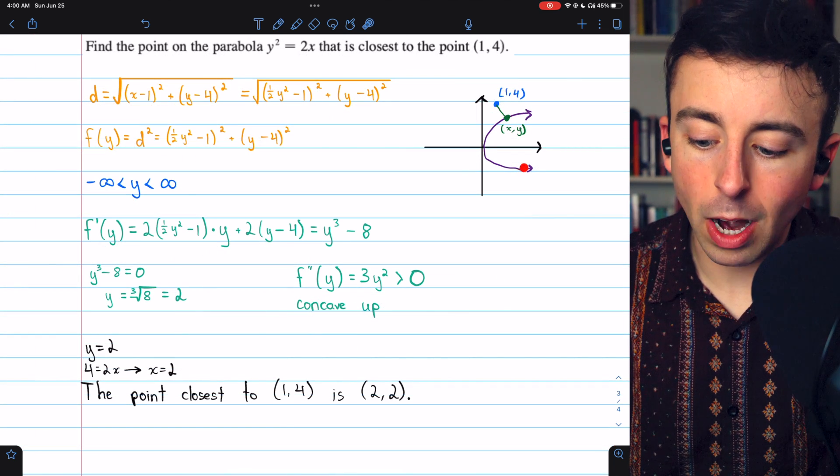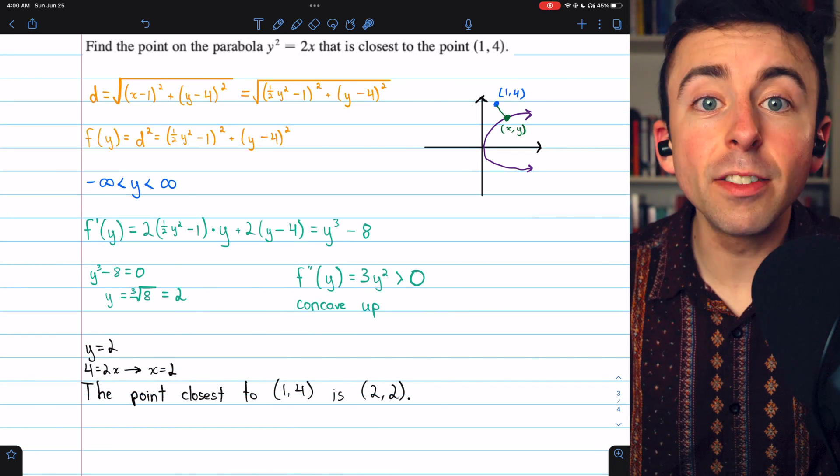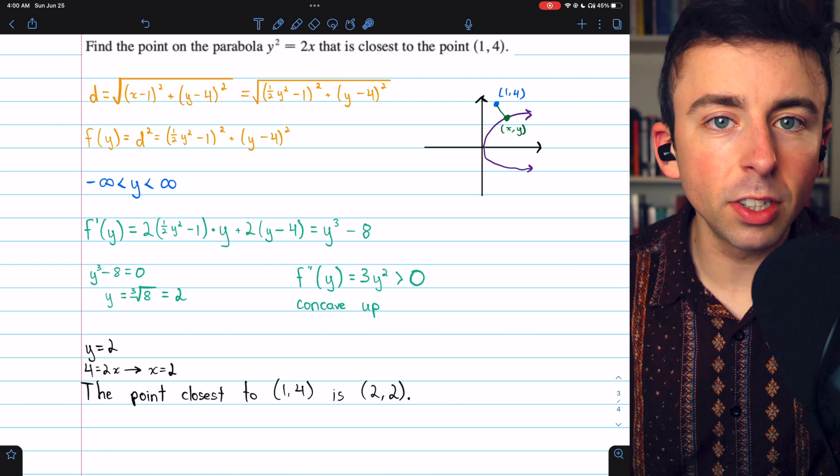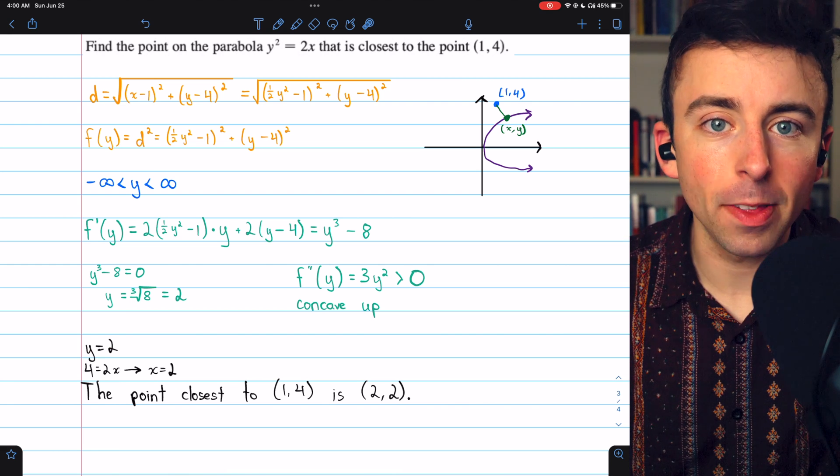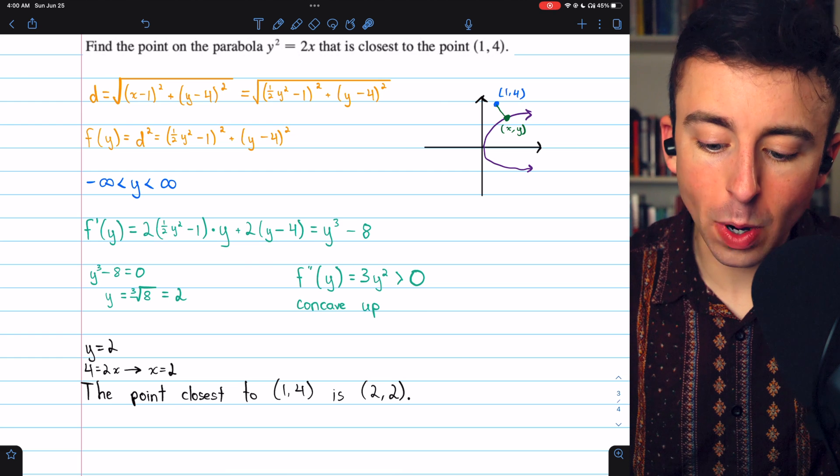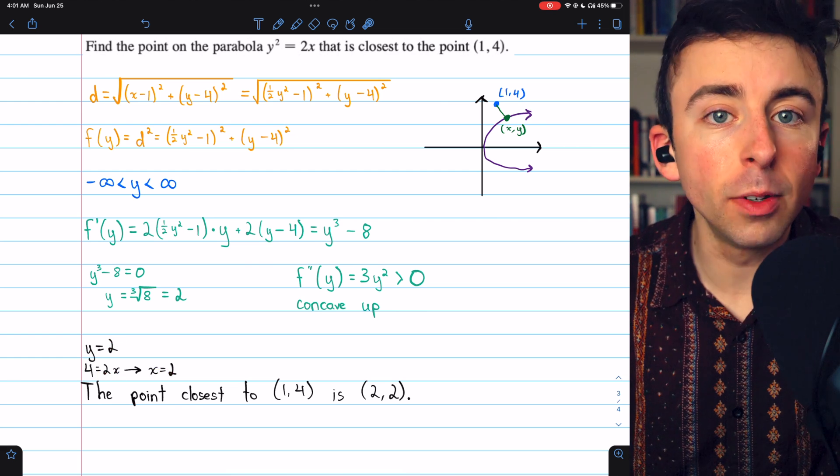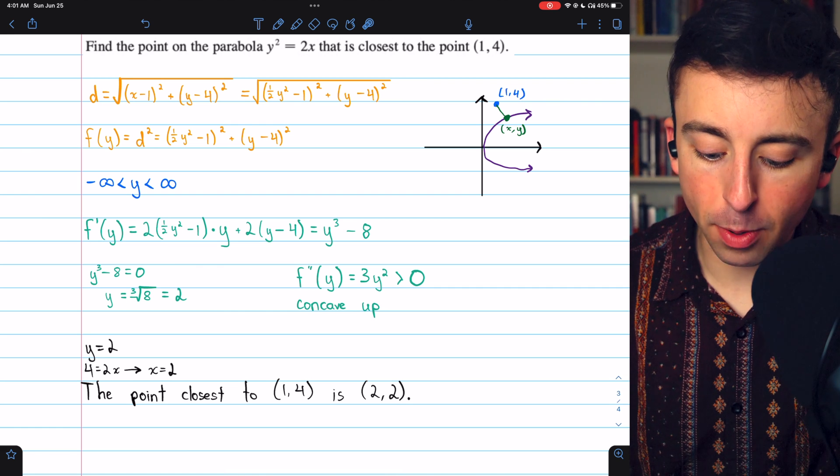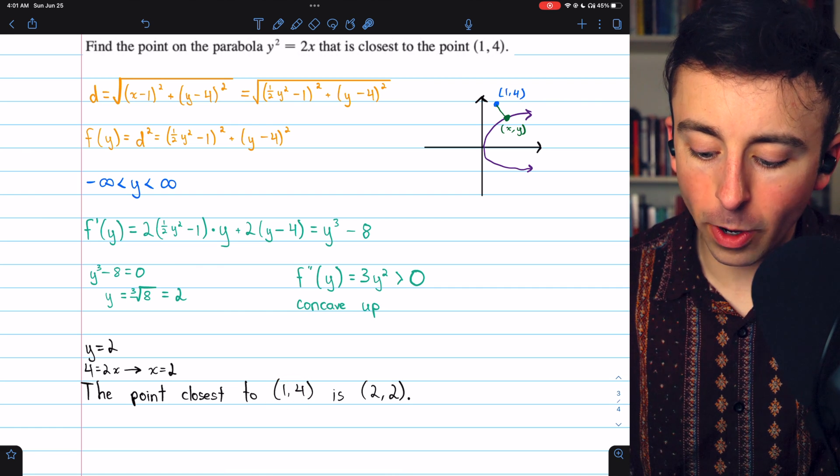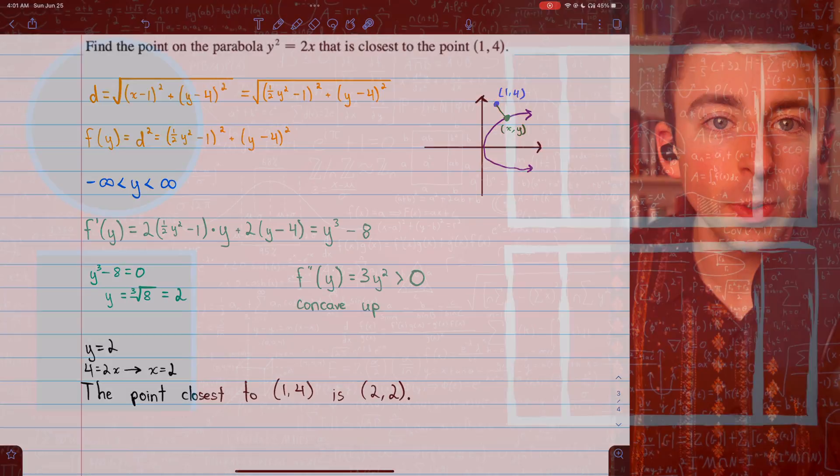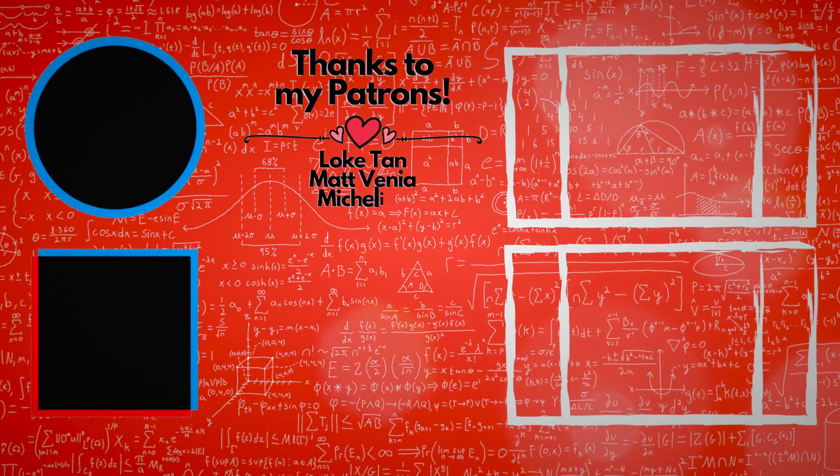So the distance between the parabola and the point is minimized when y equals 2. What's the x coordinate there though? Well, since y squared equals 2x, when y equals 2, x is forced to be 2. So the point on the parabola closest to (1,4) is the point (2,2).